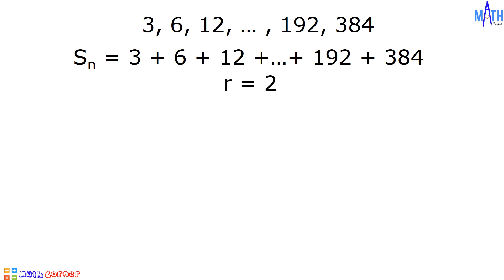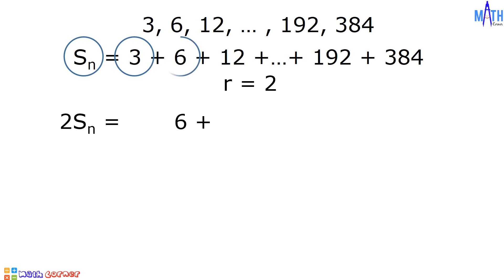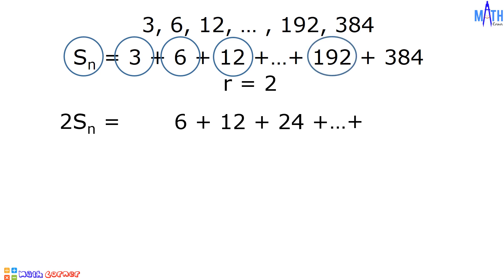Let us multiply the common ratio to each term of this equation. S sub n times 2 gives us 2 S sub n. 3 times 2 equals 6. 6 times 2 is equal to 12. 12 times 2 is equal to 24. All the way to 192 times 2 is equal to 384. And the last term, 384 times 2 is equal to 768.